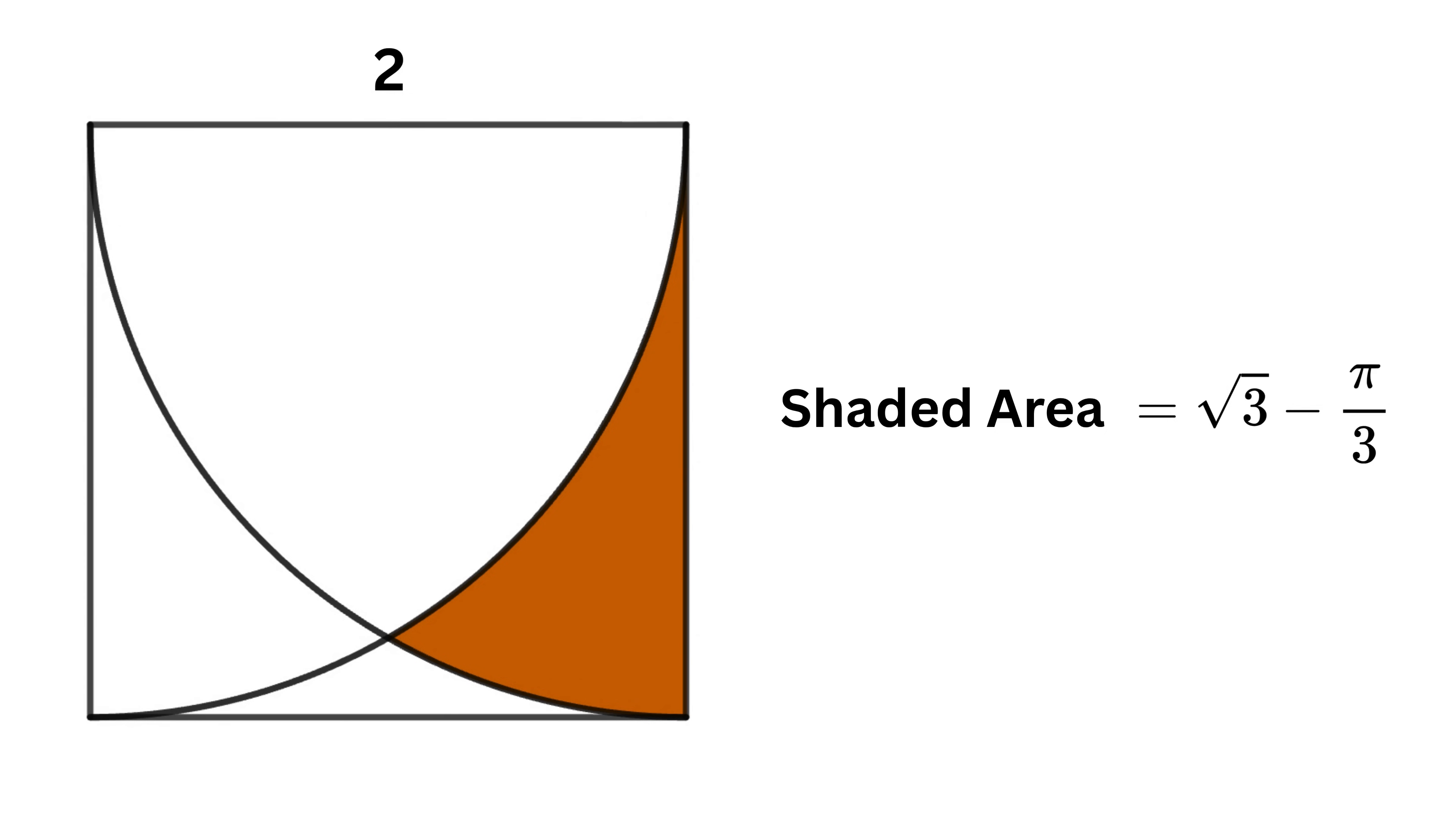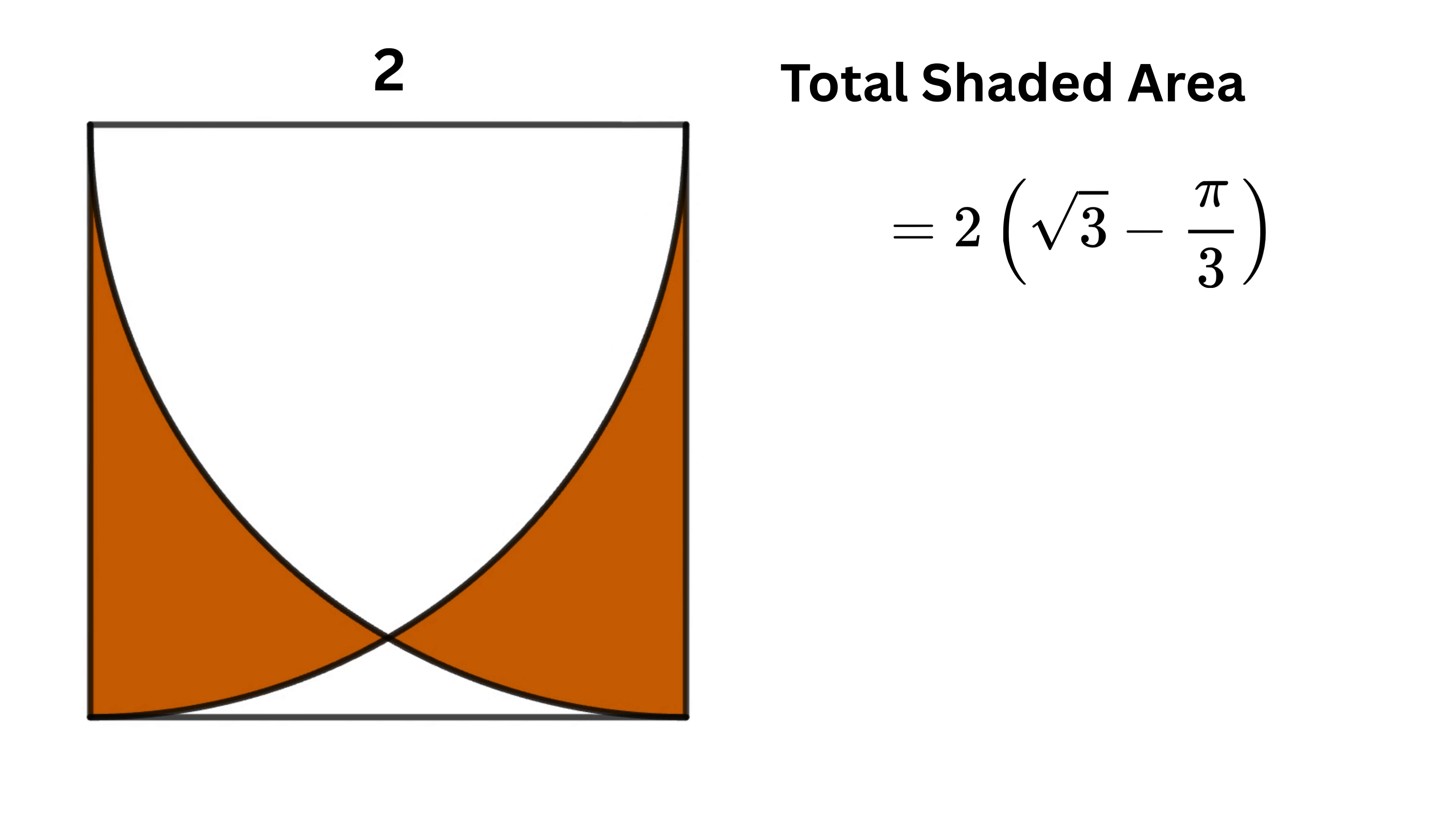Now because the entire figure is symmetrical, the shaded area on the left is exactly the same as the shaded area on the right. Therefore, the total shaded area is simply two times this, and we are done.